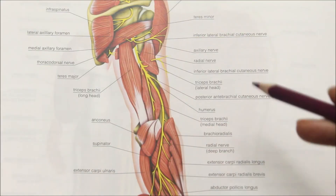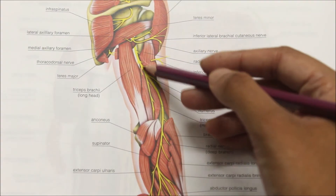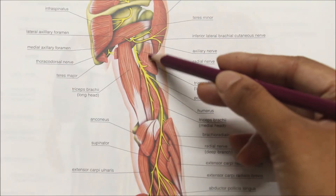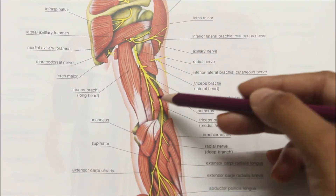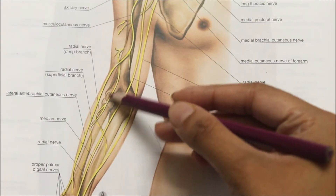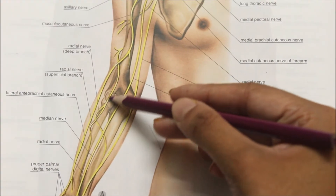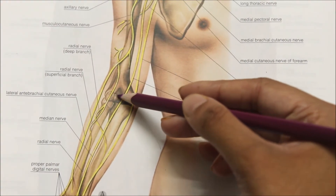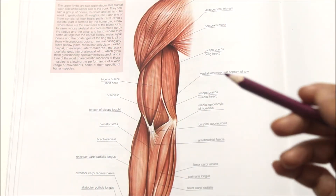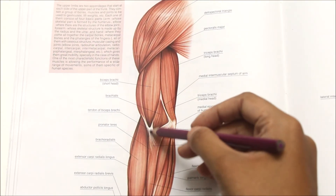From the posterior view of the arm, we can see the relations of the radial nerve more clearly. In the spiral groove, the radial nerve is related above with the lateral head of the triceps, as seen here, and below with the medial head of the triceps. At the cubital fossa it lies lateral to the biceps tendon. This is the lateral superficial view of the right upper limb showing the tendon of the biceps brachii muscle.